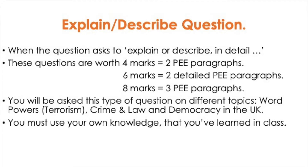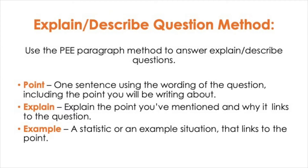You must use your own knowledge that you have learned in class. To answer an explain or describe question you will use the P-E-E paragraph method. P stands for point — one sentence using the wording of the question including the point you will be writing about. E stands for explain — explain the point you have mentioned and why it links to the question. And E stands for example — a statistic or an example situation like a case study that links to the point.